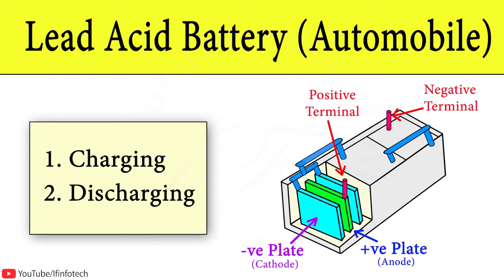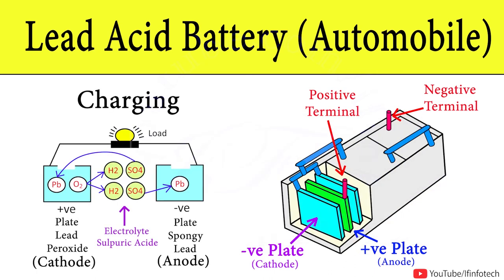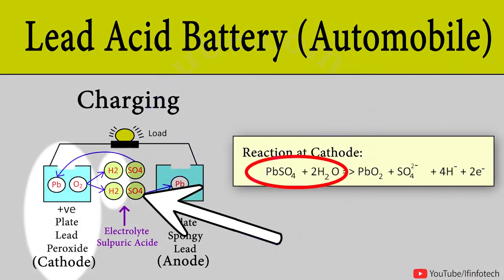The lead acid battery involves two states of chemical reaction, charging and discharging state. For charging state, to charge battery, we need to provide voltage greater than terminal voltage. Here the hydrogen exchanges electrons with cathode. This hydrogen reacts with lead sulfide in cathode and forms sulfuric acid and lead.